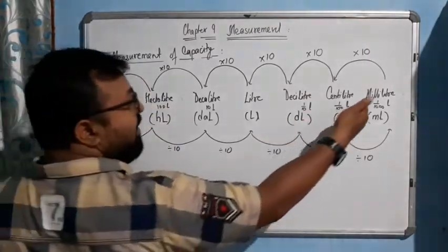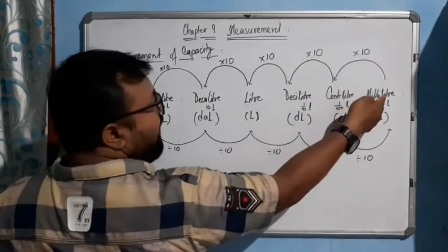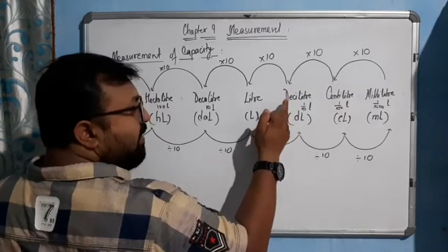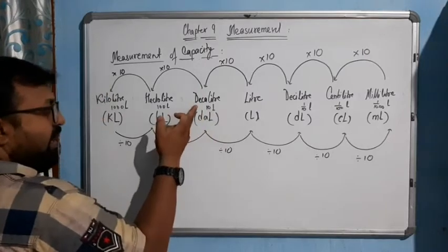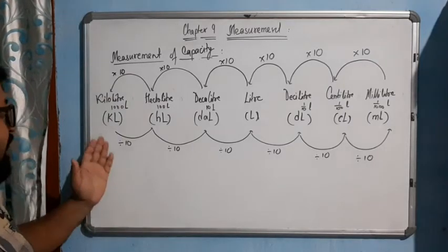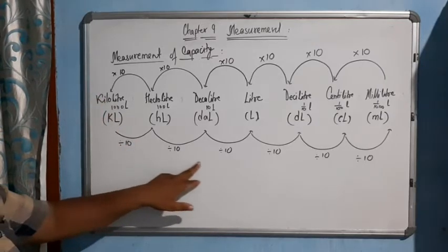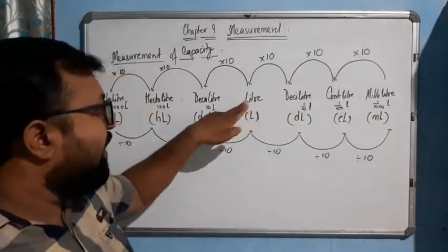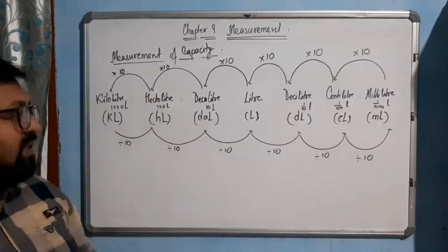For capacity, 1000 milliliters gives you one liter, and 1000 liters gives you one kiloliter. The step-by-step relationships are: 10 milliliters gives one centiliter, 10 centiliters gives one deciliter, 10 deciliters gives one liter, 10 liters gives one decaliter, 10 decaliters gives one hectoliter, and 10 hectoliters gives one kiloliter.